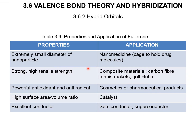Here are the properties and applications of fullerene. First, it has an extremely small diameter of nanoparticles that can be applied as nanomedicine. It is also strong with high tensile strength, so it can be used as a composite material. It has powerful antioxidant and anti-radical properties, and can be used in cosmetics or pharmaceutical products. It has a high surface area-to-volume ratio, making it very useful as a catalyst. And it is an excellent conductor, so it can be used as a semiconductor and superconductor.